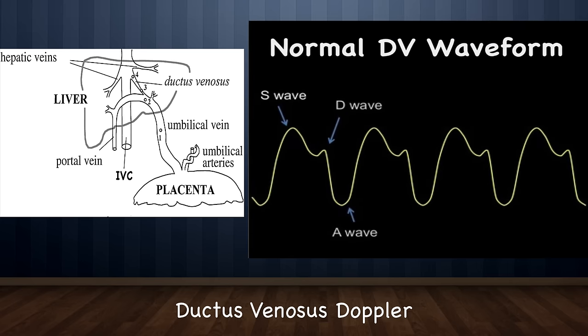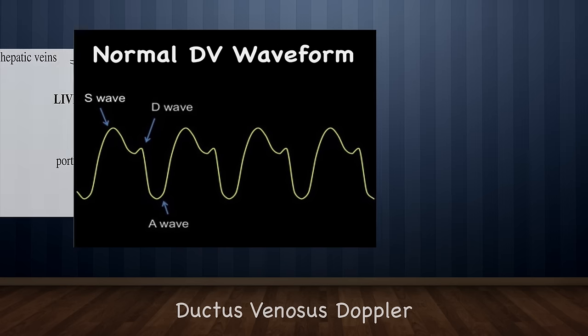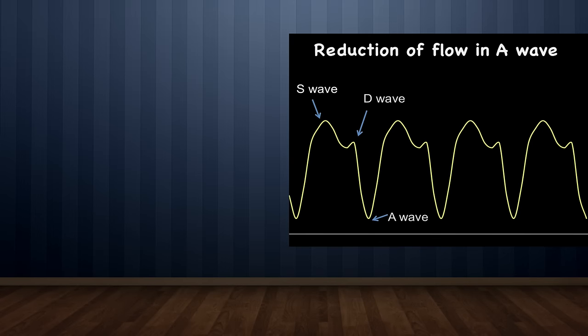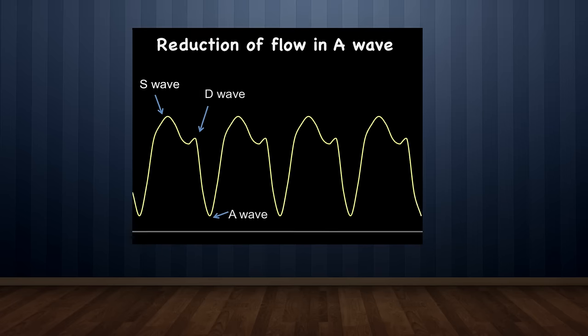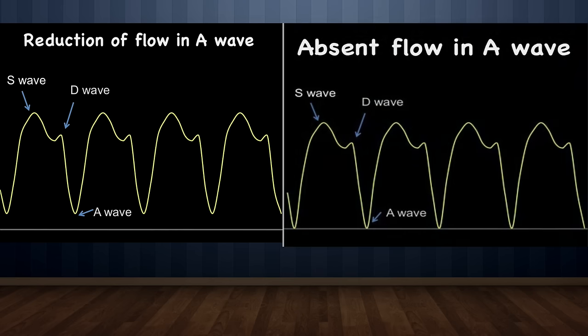In the normal fetus, flow in the ductus venosus is forwards — that is, moving towards the heart — during the entire cardiac cycle, which is seen as S wave, D wave, and A wave, as depicted here. When normal circulatory compensation of the fetus fails — that is, when an increase instead of a decrease in ductal shunt occurs — the ductus venosus waveform shows absence or reversal of blood flow during atrial contraction, as shown here.